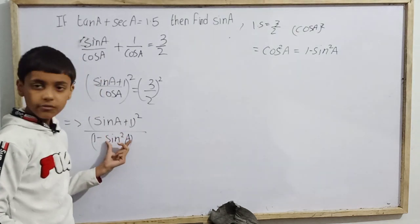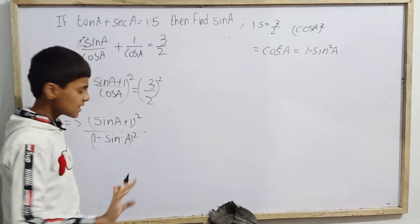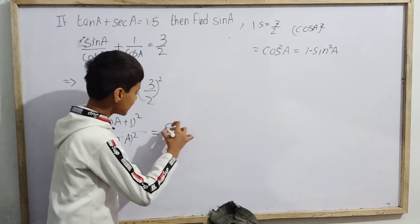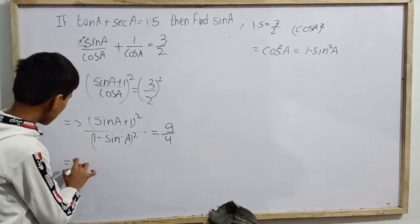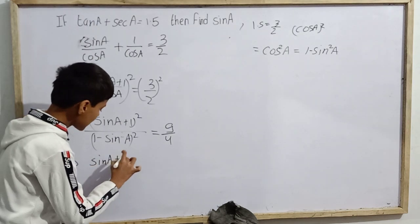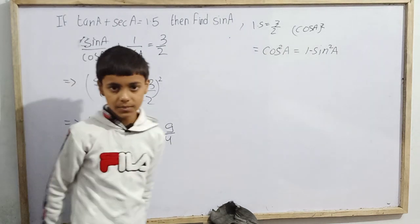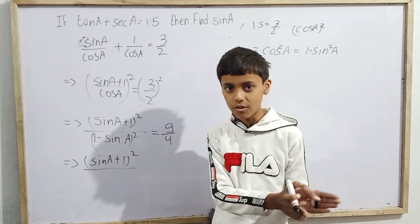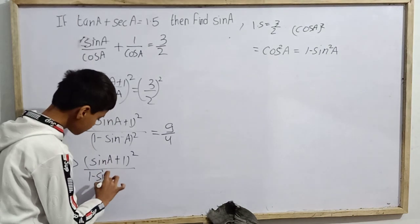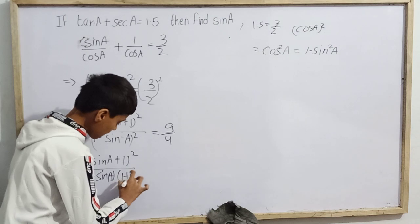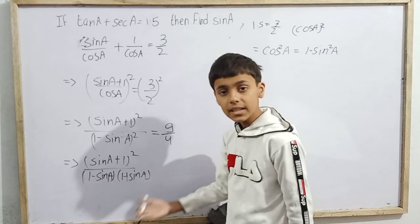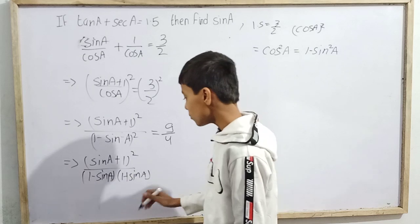The right side squared gives (3/2)² = 9/4. So we have (sin(a) + 1)² / (1 − sin²(a)) = 9/4. Now we factor the denominator: 1 − sin²(a) = (1 − sin(a))(1 + sin(a)), where 1 + sin(a) is the same as sin(a) + 1.